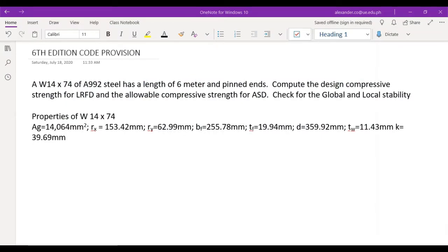So, the problem is a W shape 14 by 74. This is not A36, it's A992 steel, has a length of 6 meters and pinned at both ends. So K will be equal to 1, pinned at both sides. The question is, compute the design compressive strength for LRFD and allowable compressive strength for ASD. Also, check for the global and local stability.